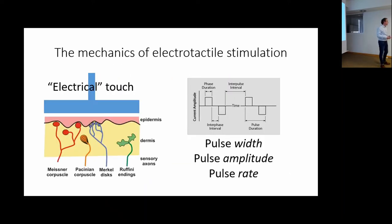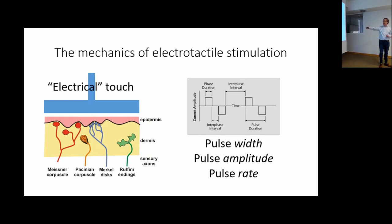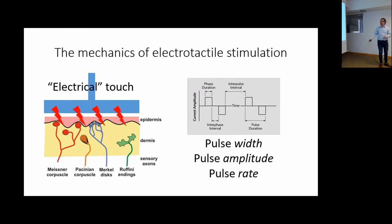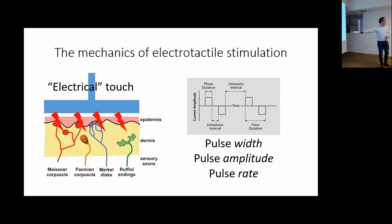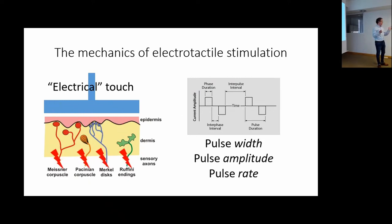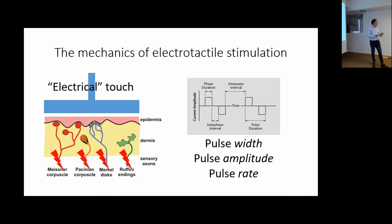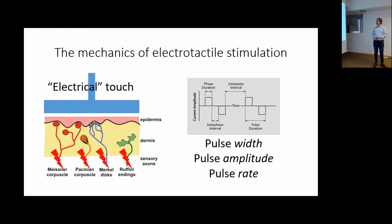Unfortunately, with electrical stimulation this selective activation cannot be done easily. There are some works in the literature showing some selectivity, but in general we stimulate non-selectively. We have an electrode above the skin, and when we send electrical pulses, they don't activate the receptors — they activate the neural fibers. So whatever is below the electrode gets activated, typically a mix of different receptor types. That's why electrical stimulation feels specific, a so-called 'electrical touch,' and we'll speak about some sensory modalities a bit later on.